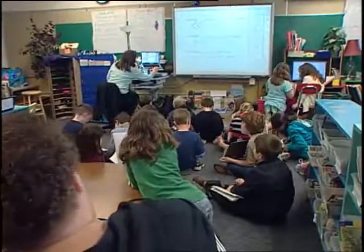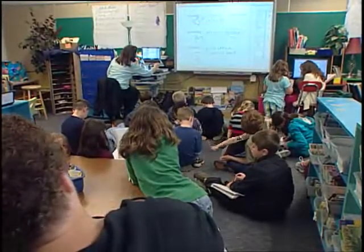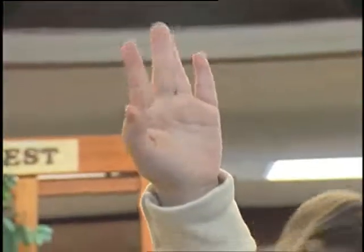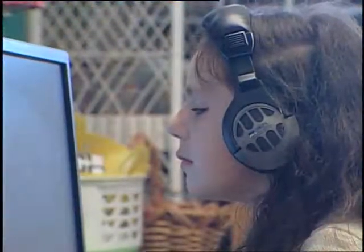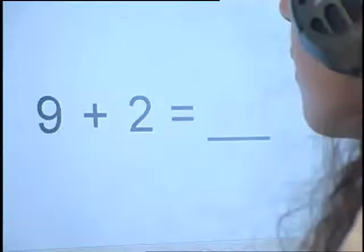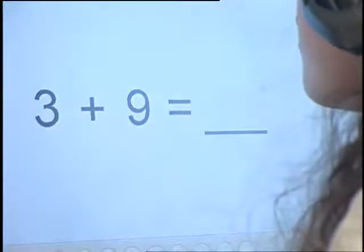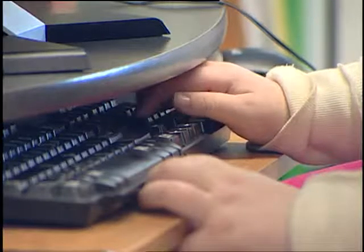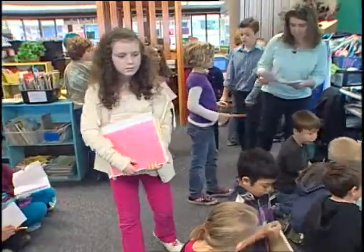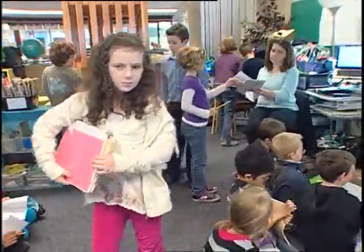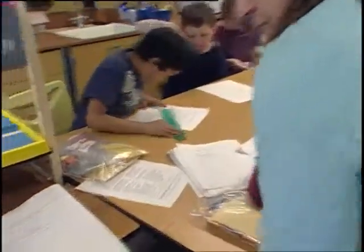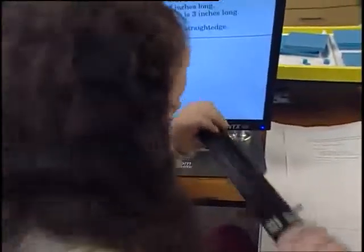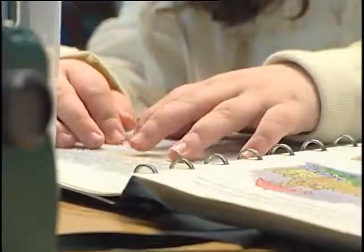Two important points need to be made. This is only one scenario. Each child is different and therefore each child's program is different and should be tailored to his or her unique needs and classroom environment. Finding what is right for each individual is a process. Second, our goal is always to achieve independence, but this can only be achieved through adequate instruction and support. We strive to ensure that each student has the skills, the tools, and the experience to achieve the goal of independence.